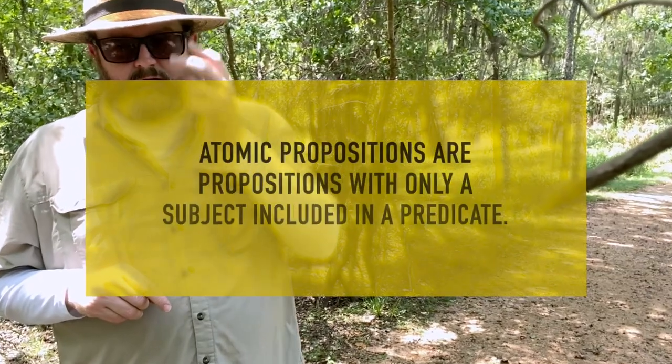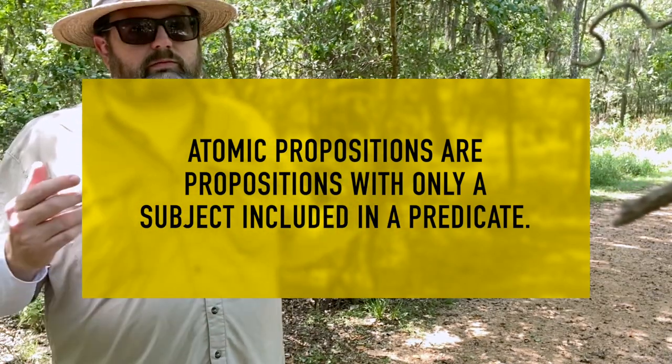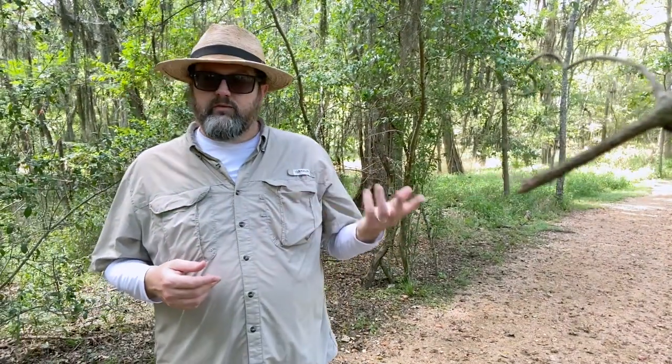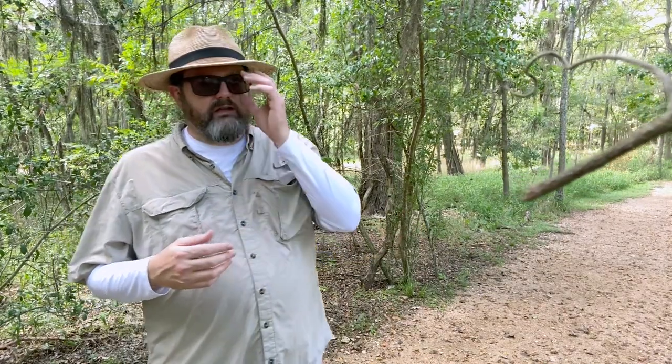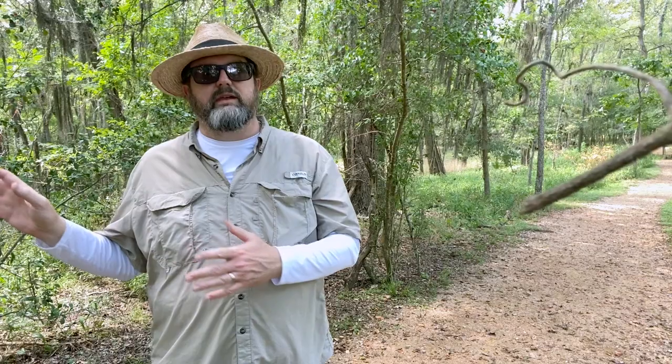Categoricals are one kind of proposition. From here on out, we're going to delineate two main different kinds: atomic propositions and complex propositions. Atomic propositions are just a subject and a predicate — the smallest kind of proposition. You can't break it apart anymore without losing the proposition. It's the building block for all other propositions. Everything beyond this is a complex proposition, built out of atomic propositions and some logical connective.